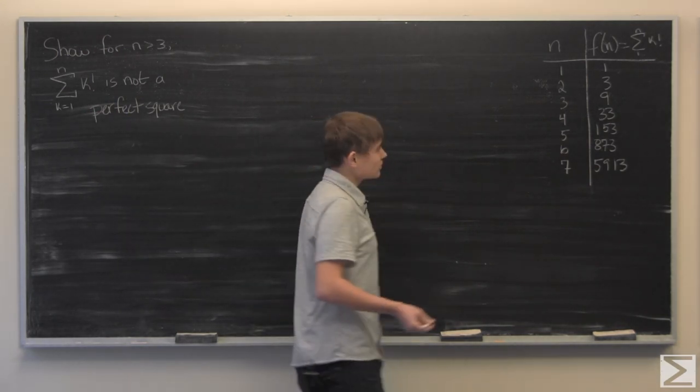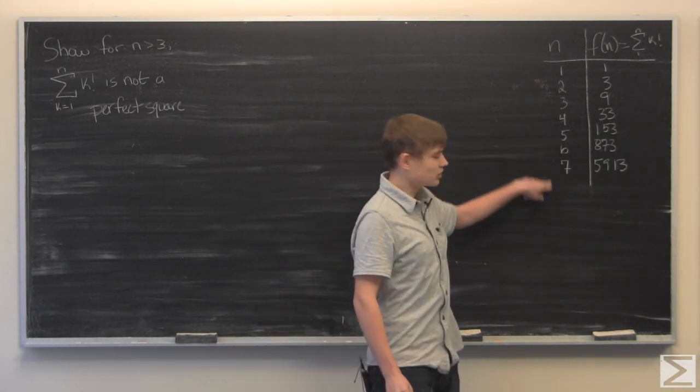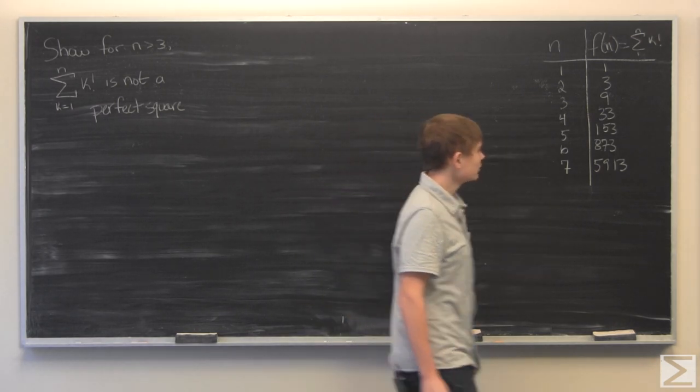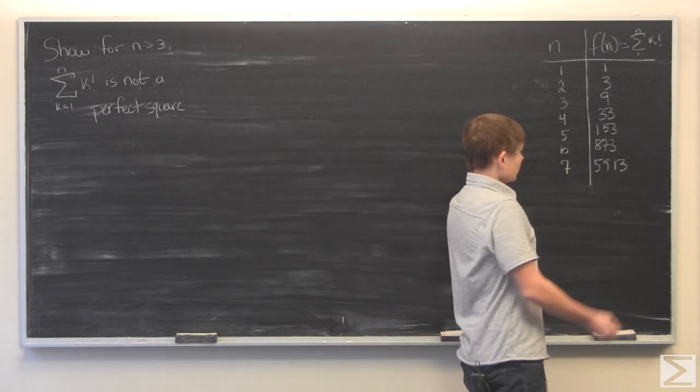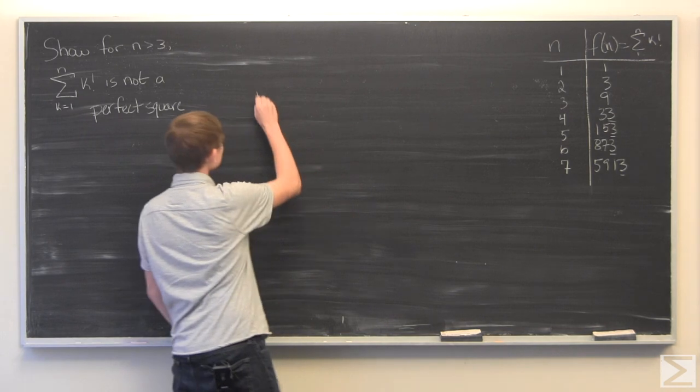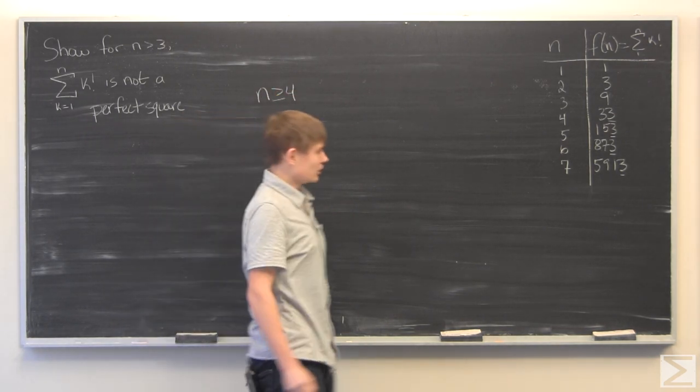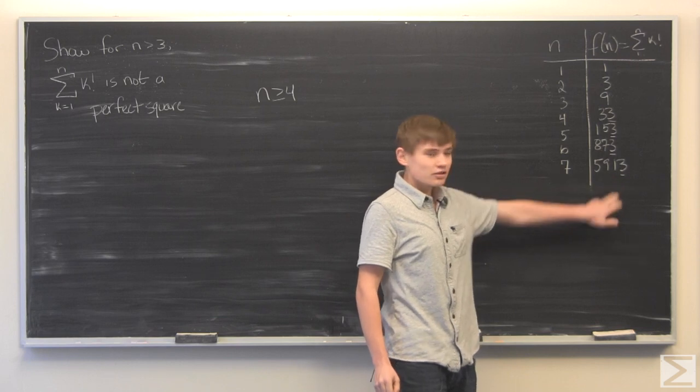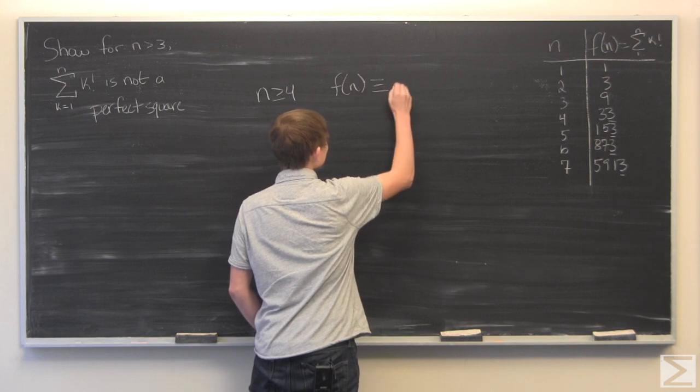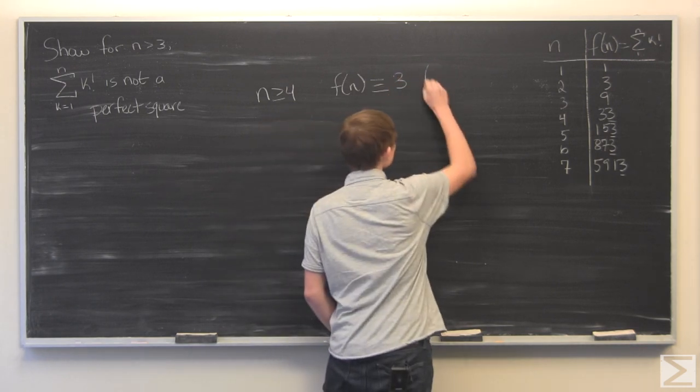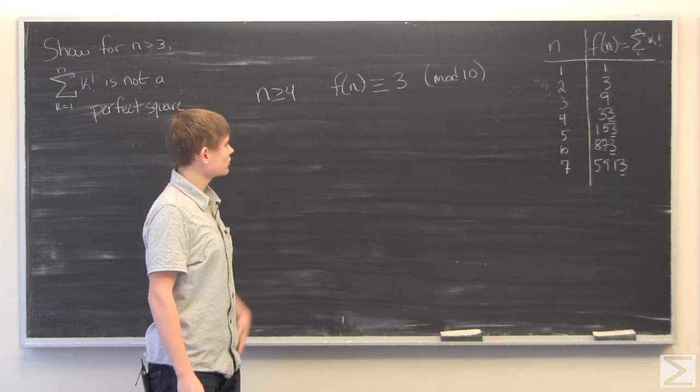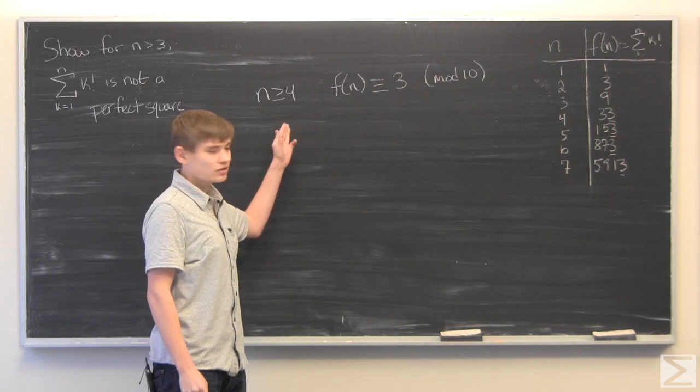And to get started with this it's usually good to do some partial sums to see if there's any patterns. So I did the first 7 right here and if you notice it looks like for n greater than or equal to 4 that the partial sum will always end in a 3 or that f of n is congruent to 3 mod 10. So let's see if this is true and why this is true.